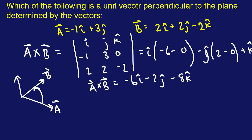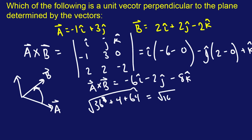So the magnitude is going to be 6 squared — I'm skipping ahead a little bit — so that's 36, plus 4, plus 64. And then you square root this, so you're going to get 40 plus 64, which gives you 104. That might be able to be simplified — 10 squared? No, you can't do that. Never mind. That is the magnitude.